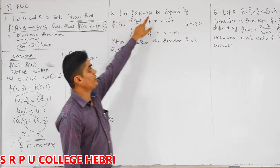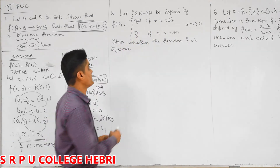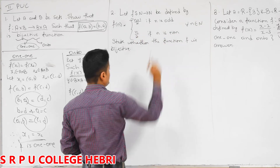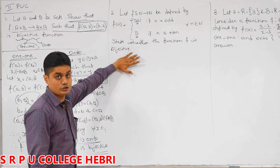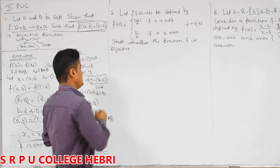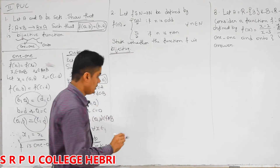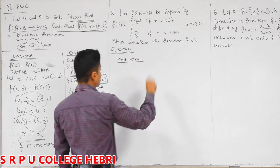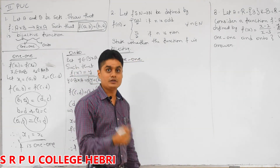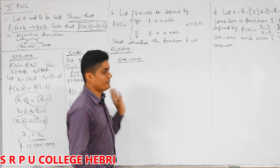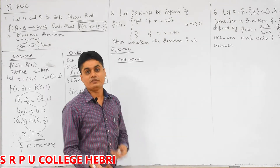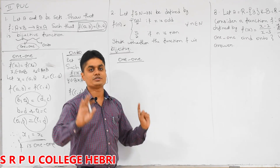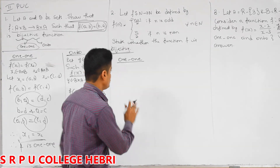What is the next question? f from N to N, where N is the natural numbers, defined as f(n) = (n+1)/2 if n is odd, and n/2 if n is even. We have to check whether it is bijective or not. Same procedure — let me verify first whether it is one-one or not. If it is one-one, then proceed to check whether it is onto.